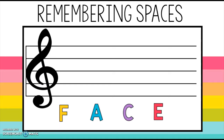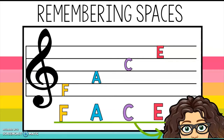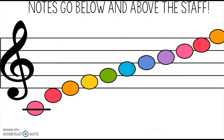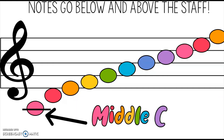Now let's talk about the spaces. The spaces are a little bit easier to remember because you just have to remember this word: FACE — F, A, C, E. And it's kind of easy to remember FACE because you know you have one right there.